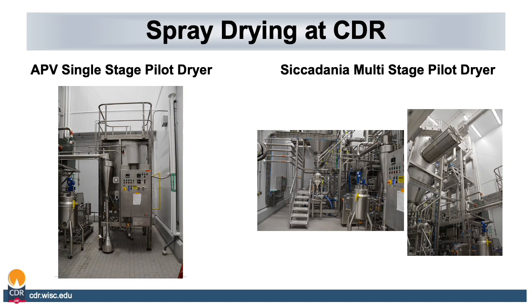At the CDR we have two pilot scale spray dryers. We have an APV single stage pilot dryer which is only about 8 feet tall. We also have a new Cibadania multi-stage pilot dryer which is 30 feet tall and has a fluid bed, which you can see in the picture in the middle. There is also an explosion area which you can see as the large apparatus sticking out of the spray dryer chamber in the right picture.